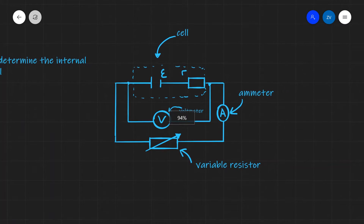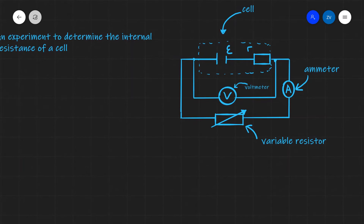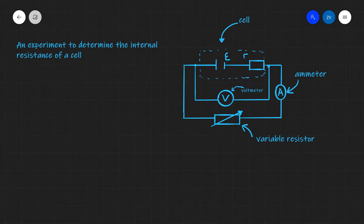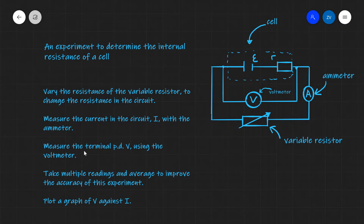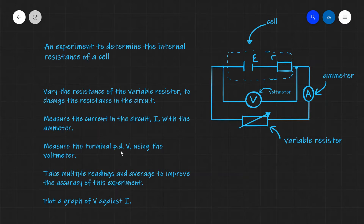Let's formulate how we would do an experiment to determine the internal resistance of this cell. First, we need to vary the resistance of the variable resistor, which will change the resistance in the circuit. As we do that, we're going to measure the current I with the ammeter and the terminal PD using the voltmeter. As always, we'll take multiple readings and average them to improve the accuracy of our experiment.